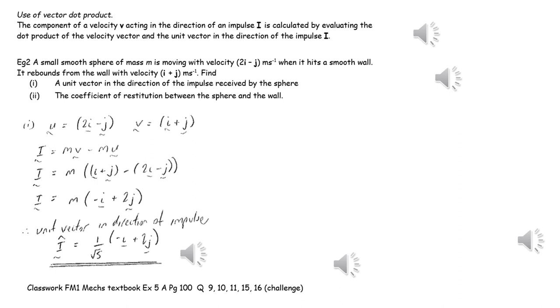We know the initial velocity, we know the final velocity, and therefore we can work out the impulse acting on the object, even though we don't actually know what the mass of the object is as a numerical value. Once we've got the impulse vector, then we can work out a unit vector in the direction of the impulse.